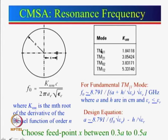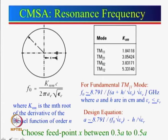TM11 mode is the most commonly used. The first number implies the variation along the circumference — this 1 implies a 1 lambda/2 variation along the circumference. The second number implies 1 lambda/2 variation along the diameter. For a rectangle, the first number was variation along the length, the second along the width.